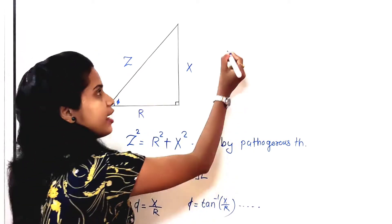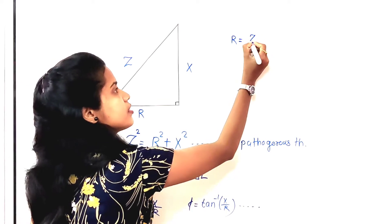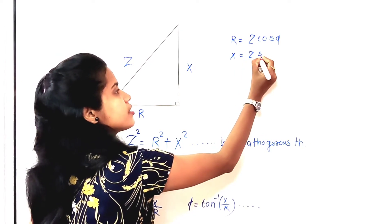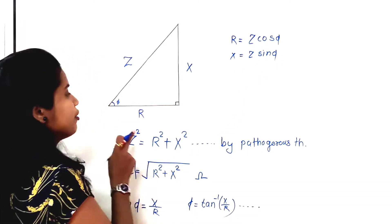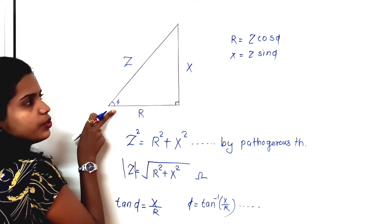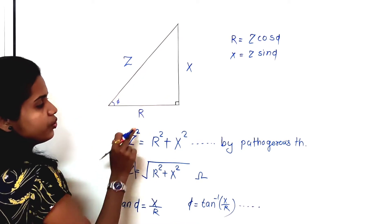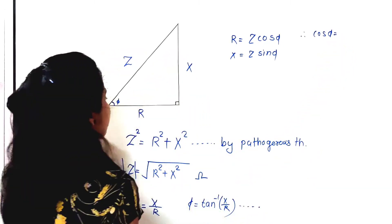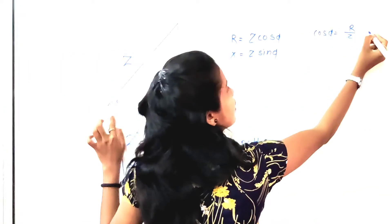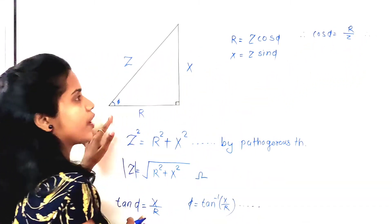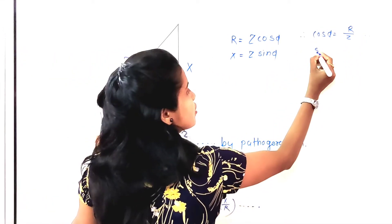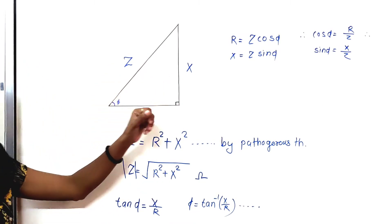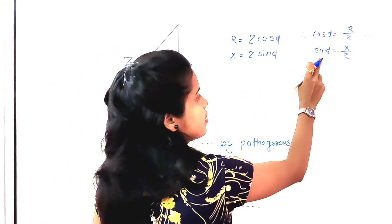From the impedance triangle we can say that R = Z·cosφ and X = Z·sinφ. This is because cosφ = R / Z, hence R = Z·cosφ, and sinφ = X / Z, hence X = Z·sinφ.